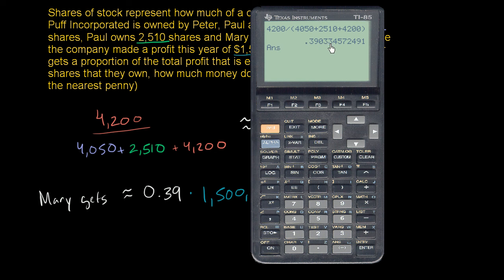So this is literally this number right over here, 0.390334, whatever. So this is the exact quantity, times $1,500,000. One, two, three. There we go. That's $1,500,000.